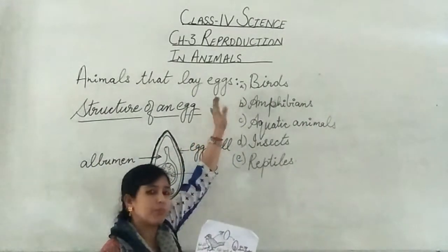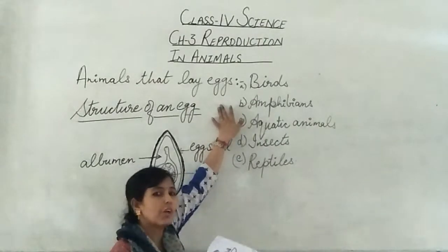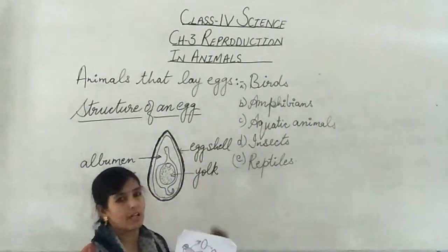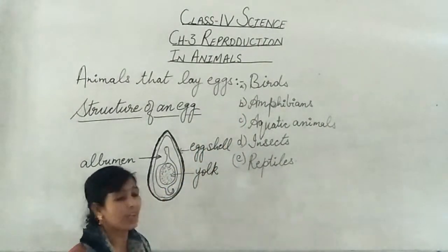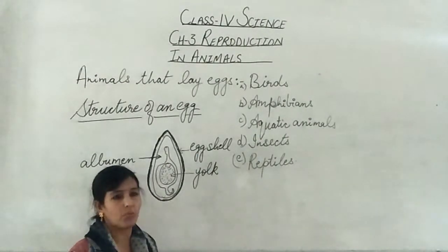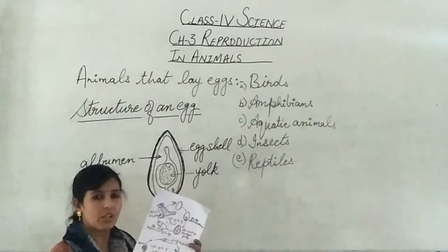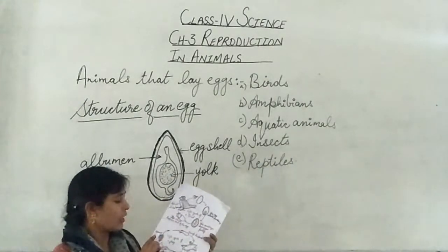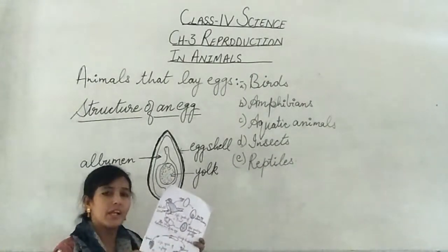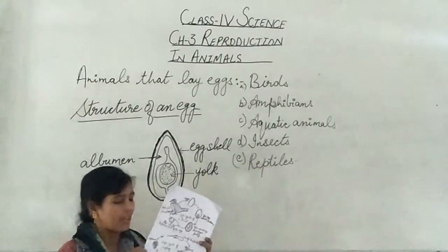Let's talk about the amphibians. Before talking about them, I would like to tell you, amphibians are those animals that live both on land as well as in water. The common example is a frog.